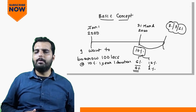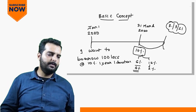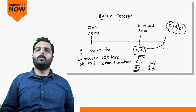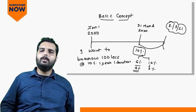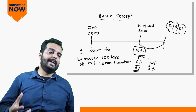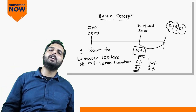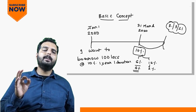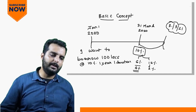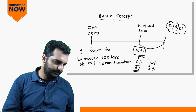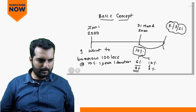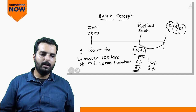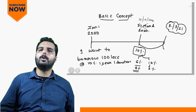Looking at this table, there are three dates: Jan 1 2020, 31st December 2020, and 31st December 2021. On Jan 1 2020, I want to borrow 100 lakhs at 10% after one year for one year duration. That means I want to borrow 100 lakhs on 31st December 2020, and repay on 31st December 2021.